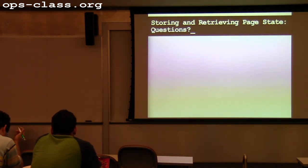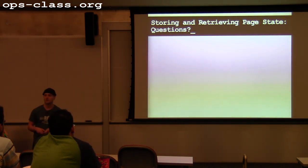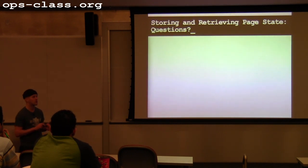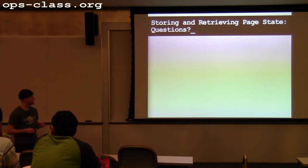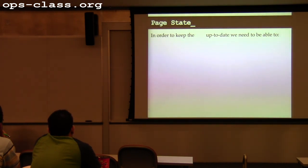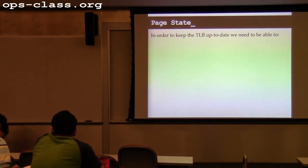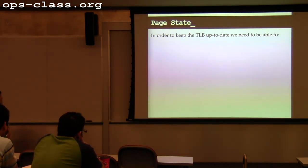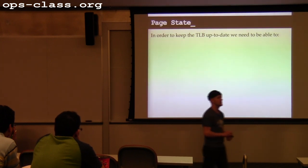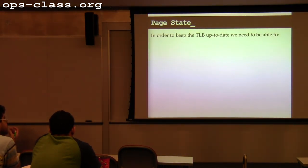On Friday we talked about when the kernel is interrupted by the memory management unit and needs to load a page translation — what data structures it uses for that purpose. Any questions before we go on? We're maintaining a cache of address translations in the TLB that the MMU uses to make virtual-to-physical address translation fast. What does the kernel need to be able to do to keep this cache current?